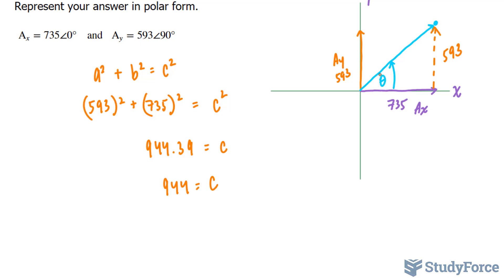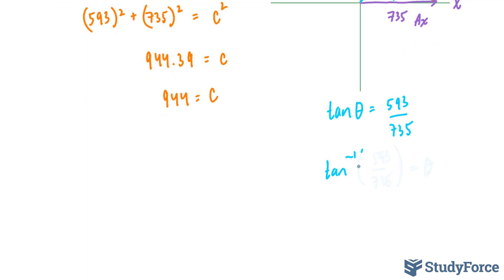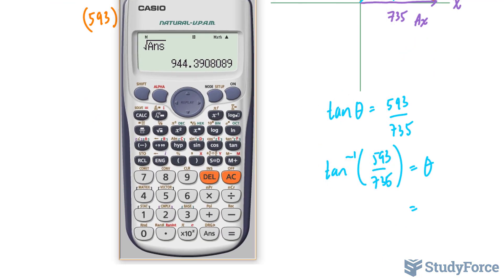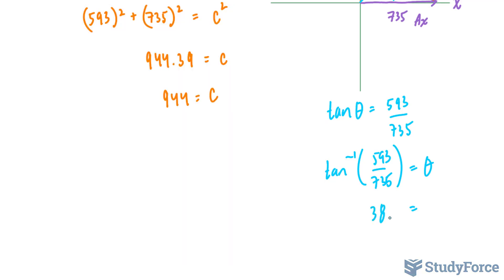Now all we have to do is find the angle. Relative to this reference angle, 593 is the opposite side and 735 is the adjacent side, so as suggested earlier, we use tangent. We have opposite over adjacent: 593 over 735. To find theta, we take the inverse tangent of both sides. Using the calculator, shift-tangent of 593 divided by 735 gives us 38.89 degrees. Working to three significant digits, our final answer is 38.9 degrees.